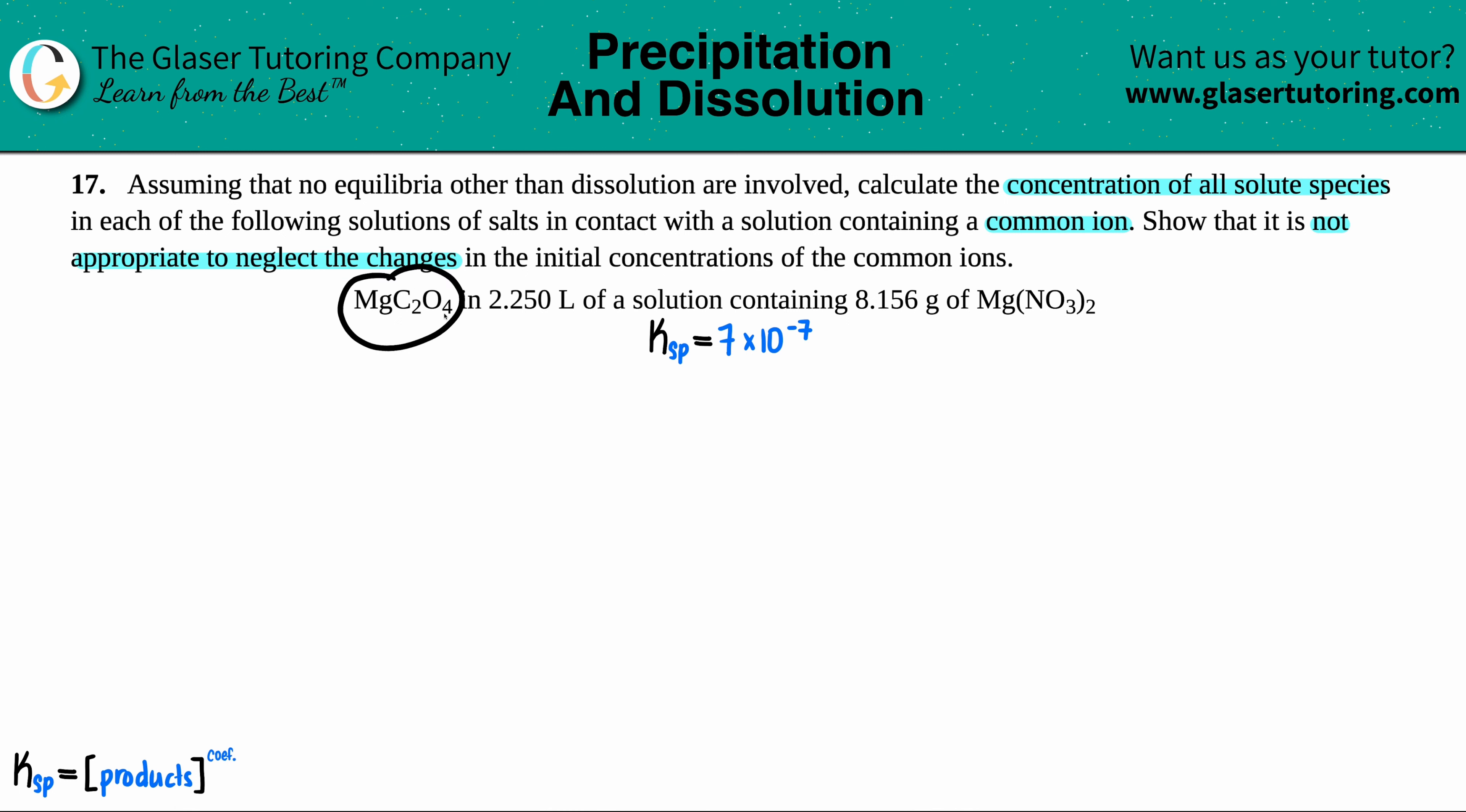They said that we have magnesium oxalate, which is MgC2O4, and this compound is in 2.250 liters of a solution that's containing 8.156 grams of magnesium nitrate, which is Mg(NO3)2. Now, we can't do this problem without getting a solubility product, a KSP value, and the KSP value is always of the solid. So we have to write the balanced equation for what this is going to dissolve. It's going under dissolution.